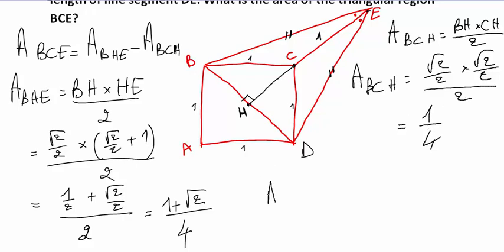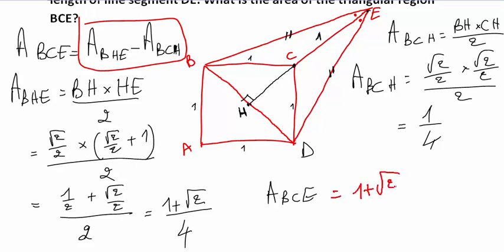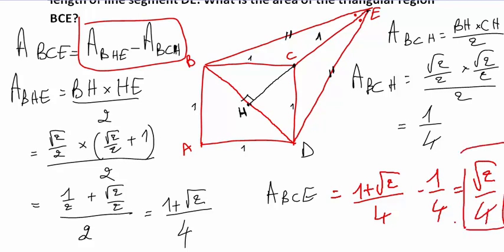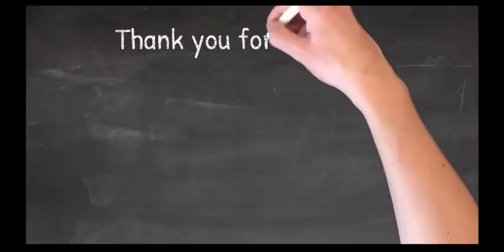Now, area of BCE equals area of BHE minus area of BCH — that is (1 + √2)/4 minus 1/4. The result is √2 divided by 4. This is the answer. Hope this question is clear — this is a complicated GMAT question. See you in the next video, thank you for watching.